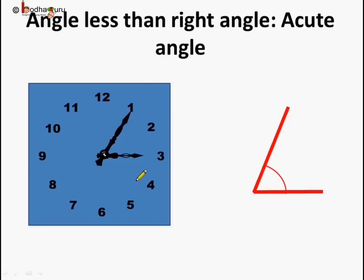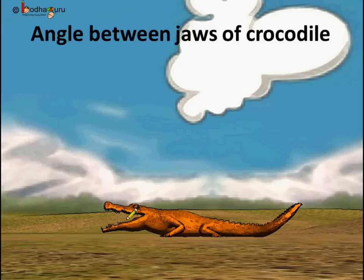Now see the clock again. What is the time now? The time is 5 past 3. The minute hand has moved and the angle has reduced. The angle is less than the right angle, or it is less than 90 degrees. When the angle is less than 90 degrees, we call it an acute angle. So in this position, an acute angle is formed between the two hands of the clock. Similarly, if we see the angle between the jaws of the crocodile, the angle is less than 90 degrees, so the angle formed is an acute angle.